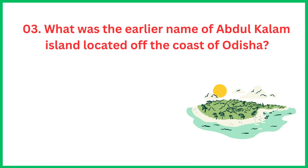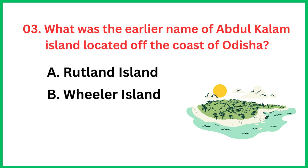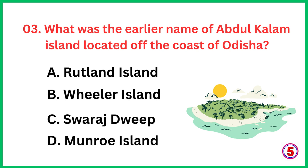What was the earlier name of Abdul Kalam Island located off the coast of Odisha? The correct answer is option B: Wheeler Island.